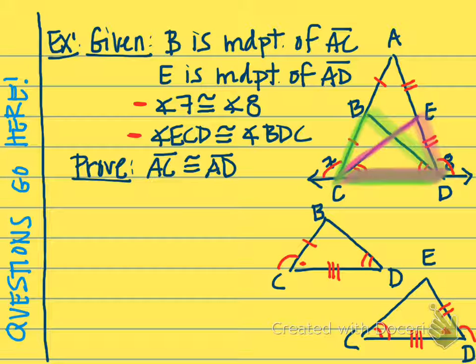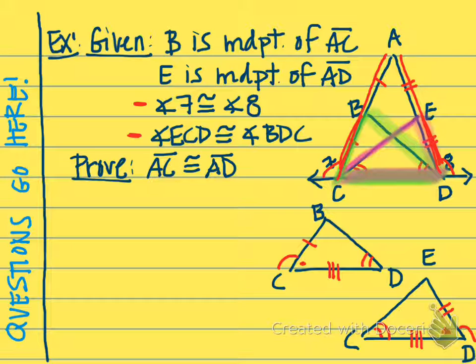After that, I'll have to figure out what I need to do next. If you look at our proof statement, we're trying to prove that segment AC is congruent to AD. AC and AD have both been bisected by midpoints B and E. So I could possibly use CPCTC to state that BC and ED are congruent, and then by the multiplication property, multiply those by two to show that AC and AD are congruent. So I kind of have a plan here.